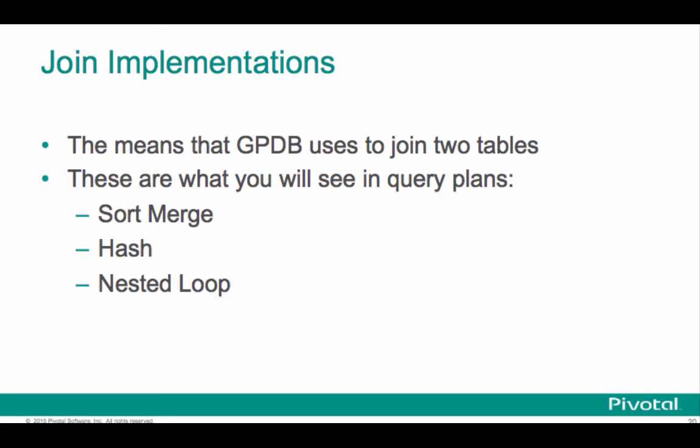Those were considerations for how do you do joins in a parallel environment, an MPP environment like Greenplum. This next part is we're going to talk about the implementations of these joins. These are the ways that Greenplum joins two tables, and these are the kind of joins you're going to see in your query plans when you do an analyze. You're going to see a sort merge join or a merge join, hash join, and a nested loop join.